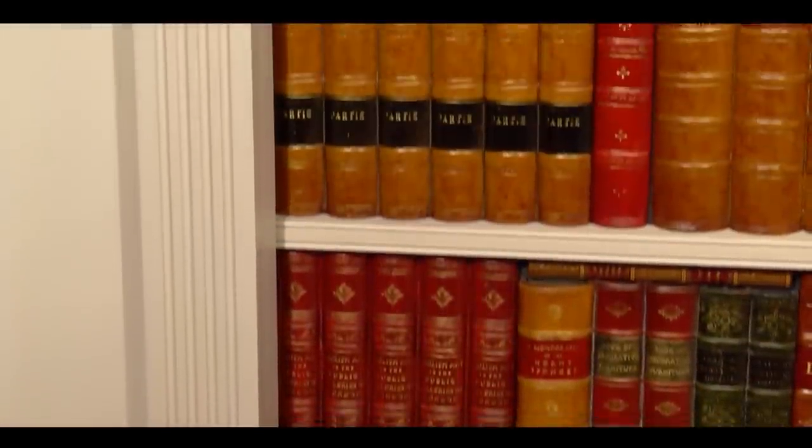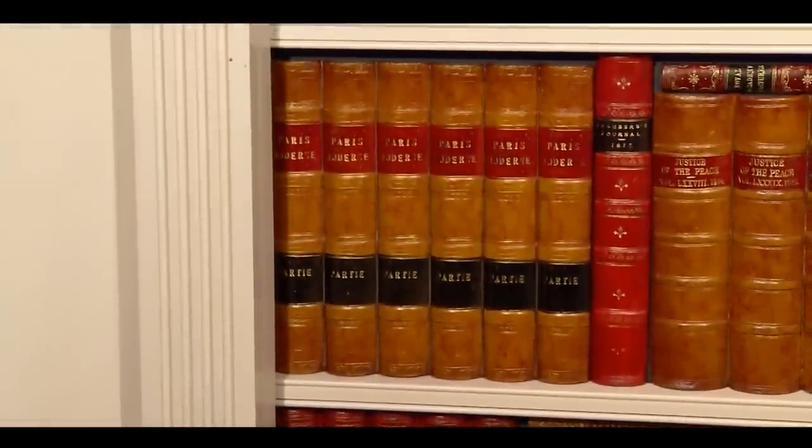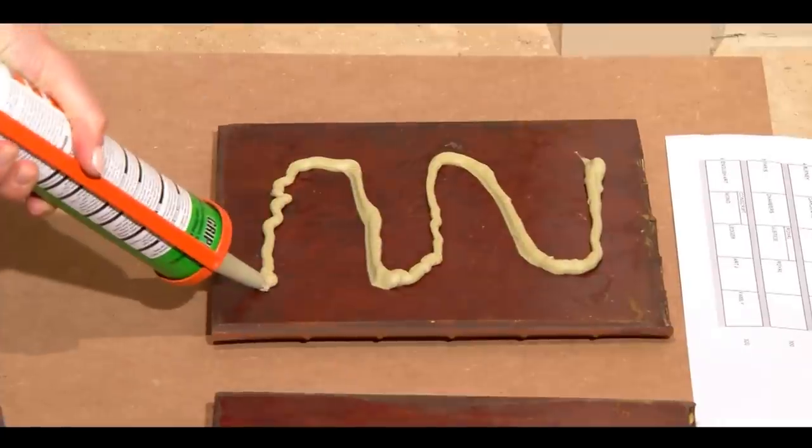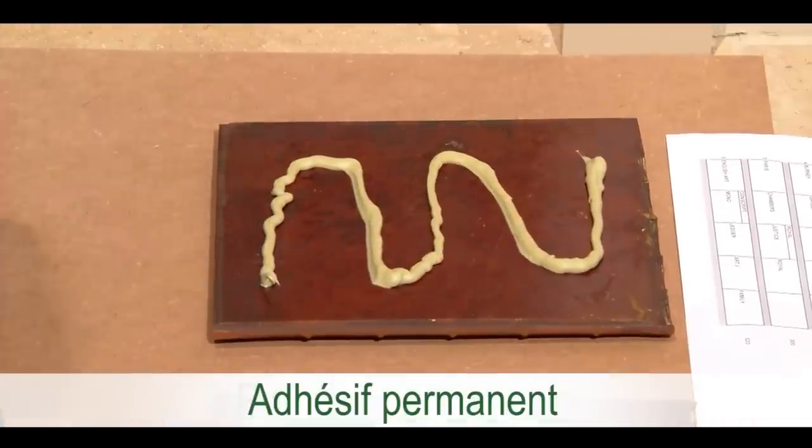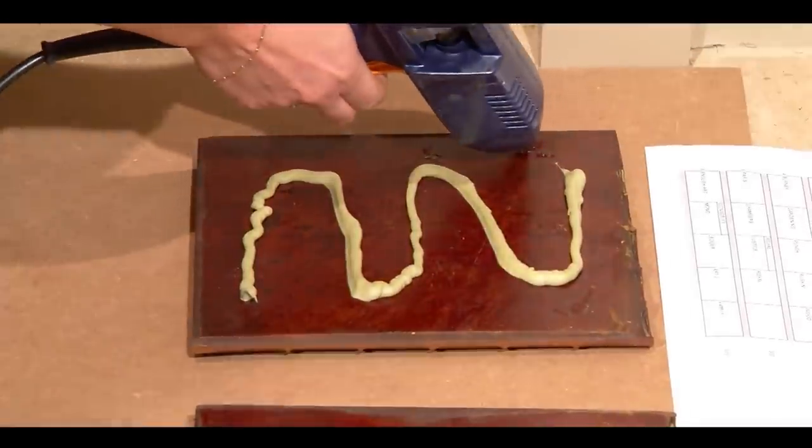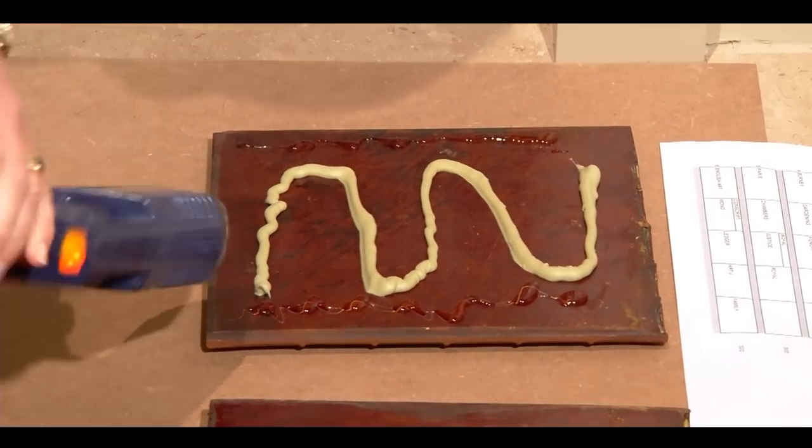You can see we have done a couple of rows already. We will show you how to do it. Spread the grip fill across the back of each panel as a permanent adhesive and put a strip of hot melt glue across each edge for instant contact to hold the panel in place.